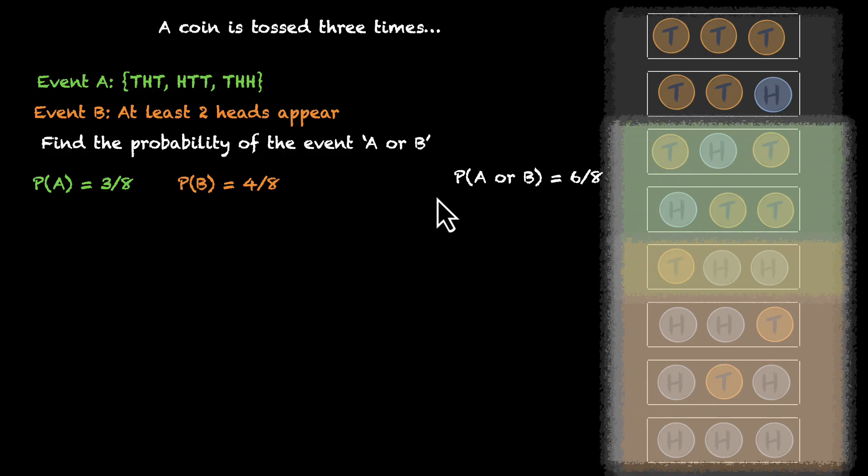Now here's a common mistake that most of us make. Sometimes we just add these two probabilities blindly to get the answer. In this case, we would have gotten an incorrect answer. Three by eight and four by eight is seven by eight, but the correct answer is six by eight. What did we do wrong here? Why can't we add these two probabilities?